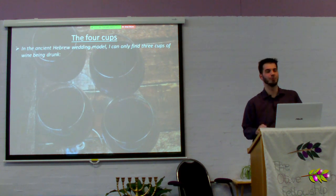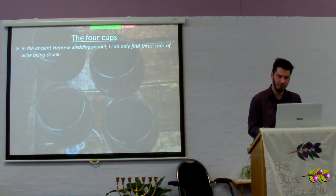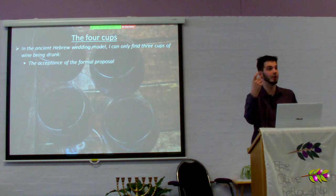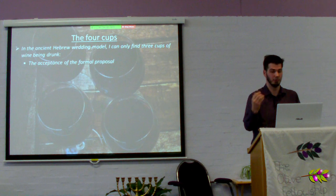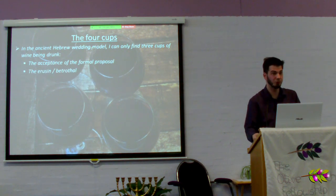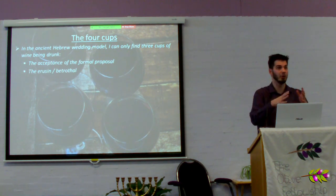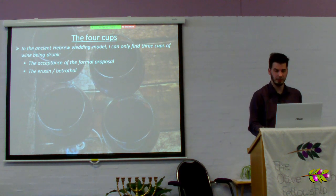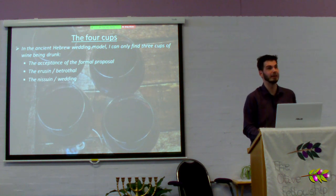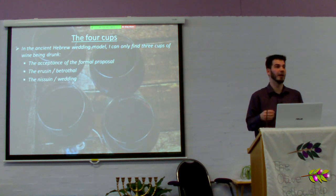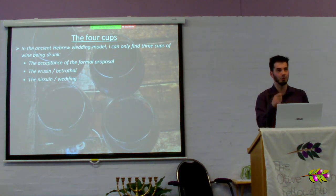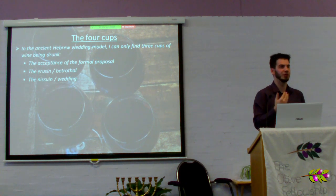Now, in the ancient Hebrew wedding model, I can only find three cups of wine being drunk: the acceptance of the formal proposal — when they stand at the door and knock, open the door, and share a meal — then the betrothal cup at the formal ceremony, then the groom goes off for a year, prepares a place, and at the actual wedding they share a cup to finalize the vow. This is where in the modern day they smash the glass to symbolize that nobody else will drink of that cup of marriage. This means there's a missing cup.